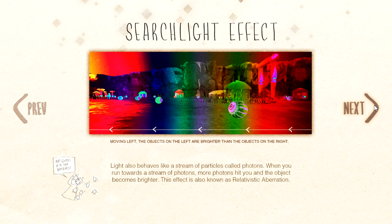Searchlight effect: light also behaves like a stream of particles called photons. When you run towards a stream of photons, more photons hit you and the object becomes brighter. This effect is also known as relativistic aberration.